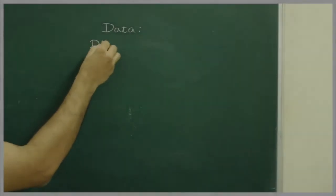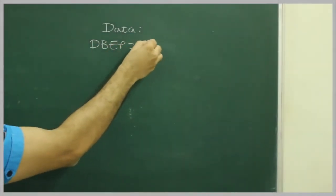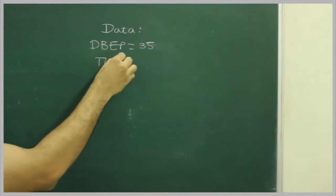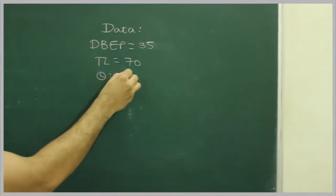So first we will write given data: DBT = 35, TL = 70, theta = 30°.